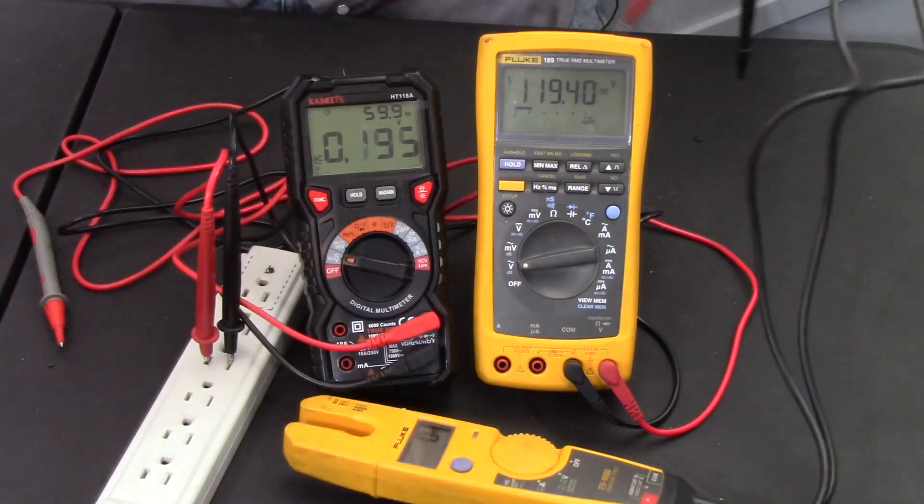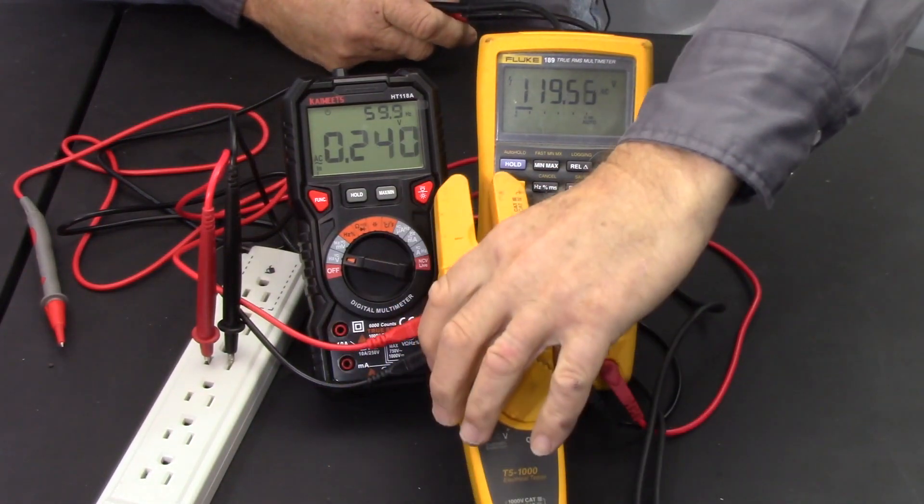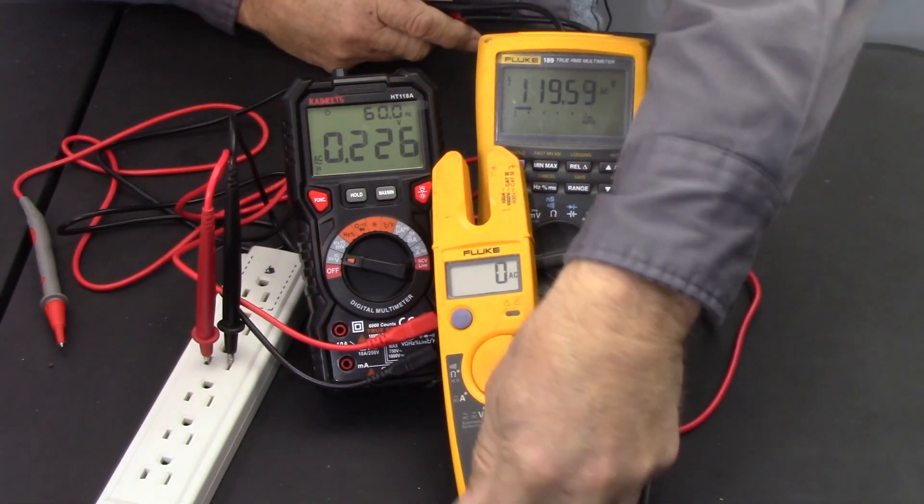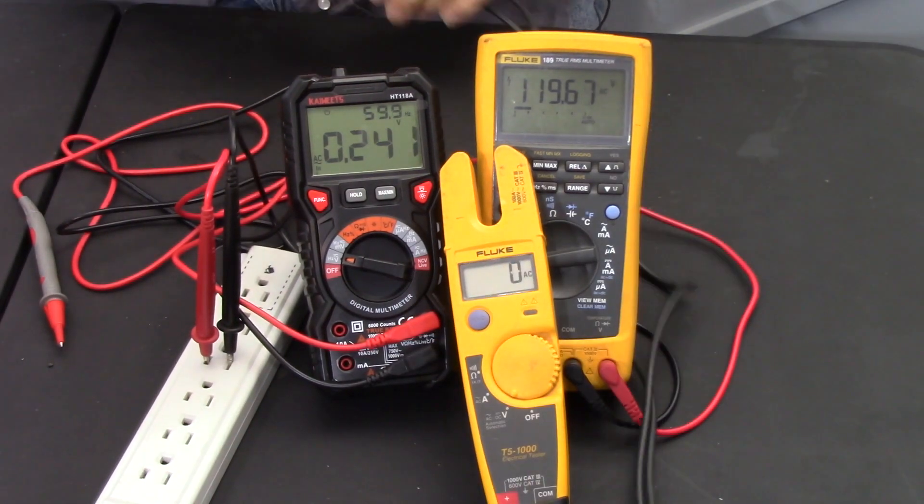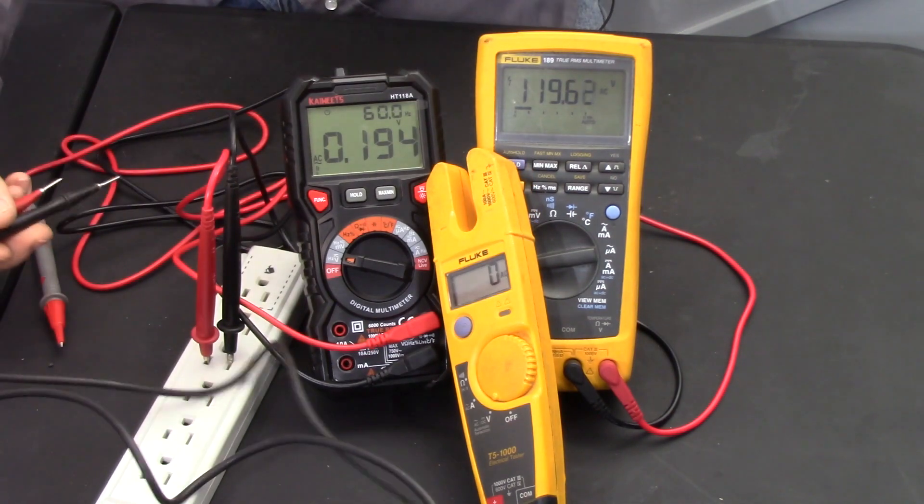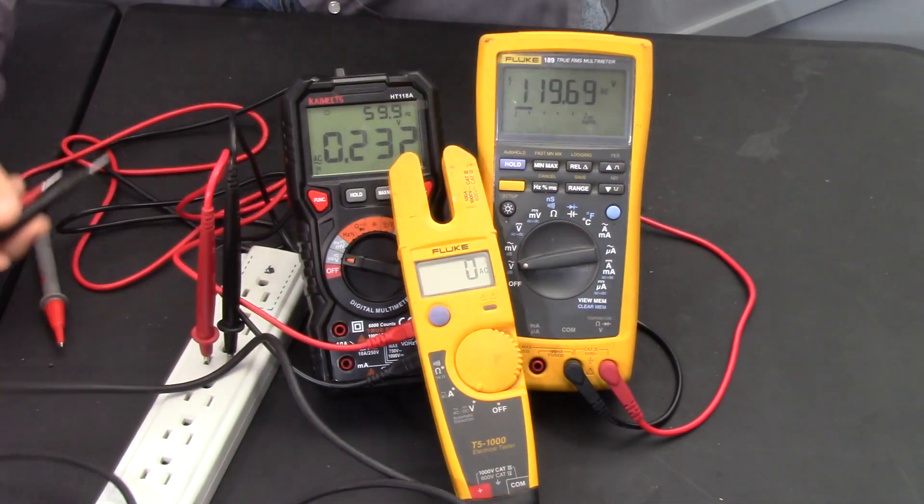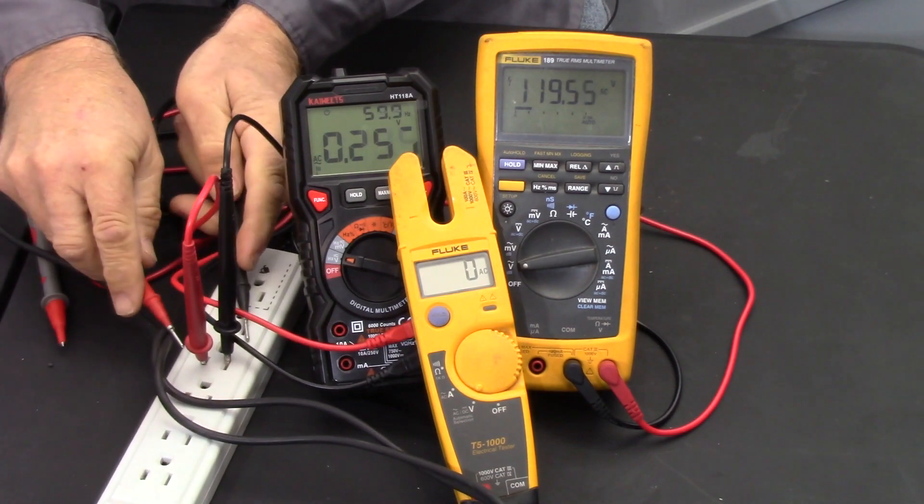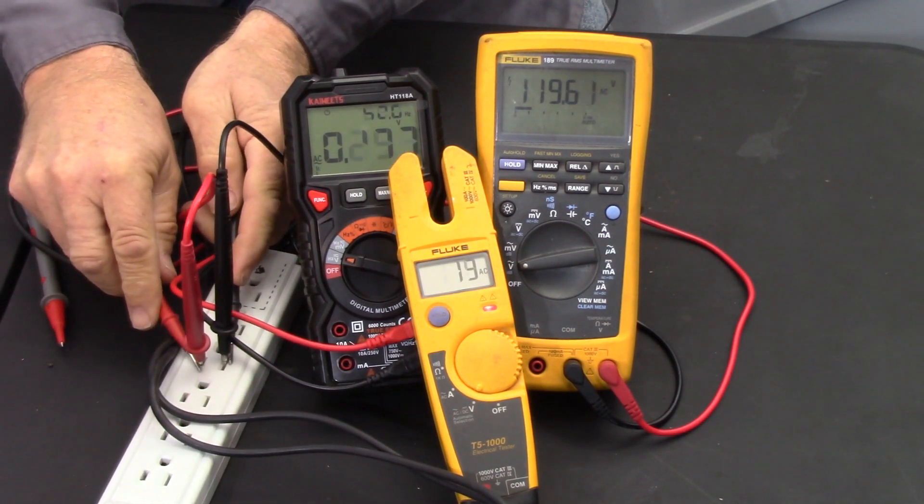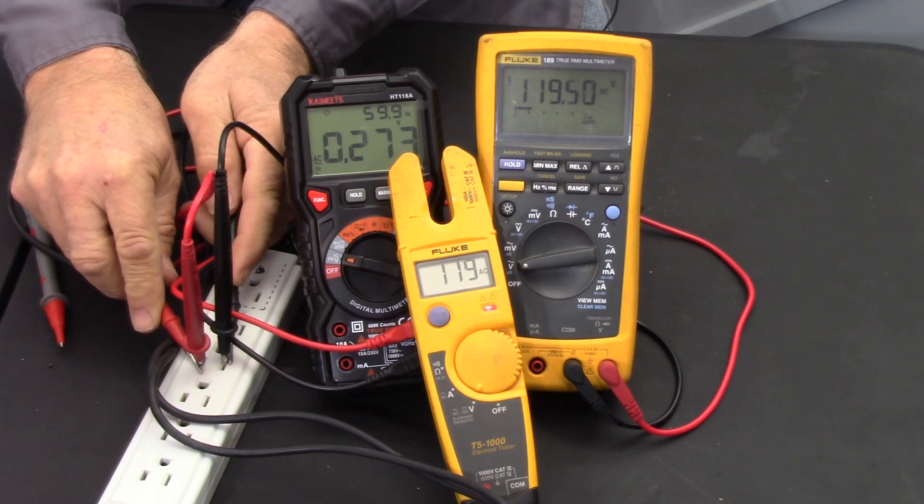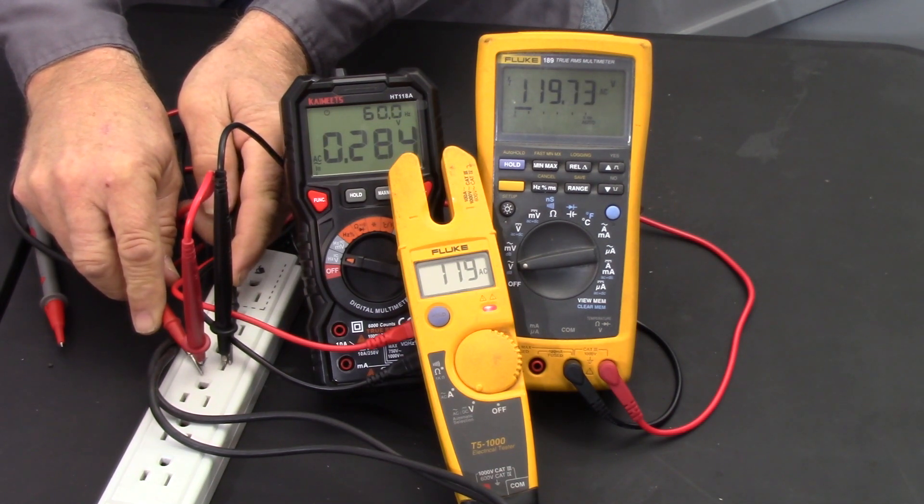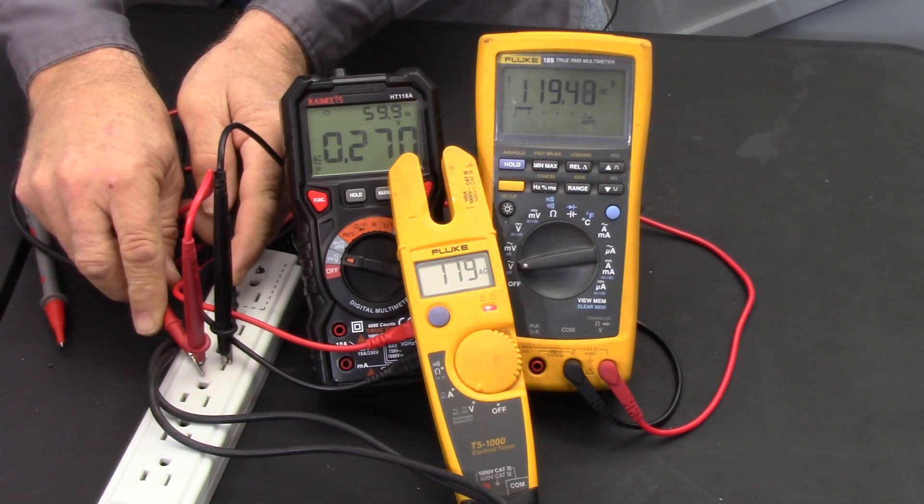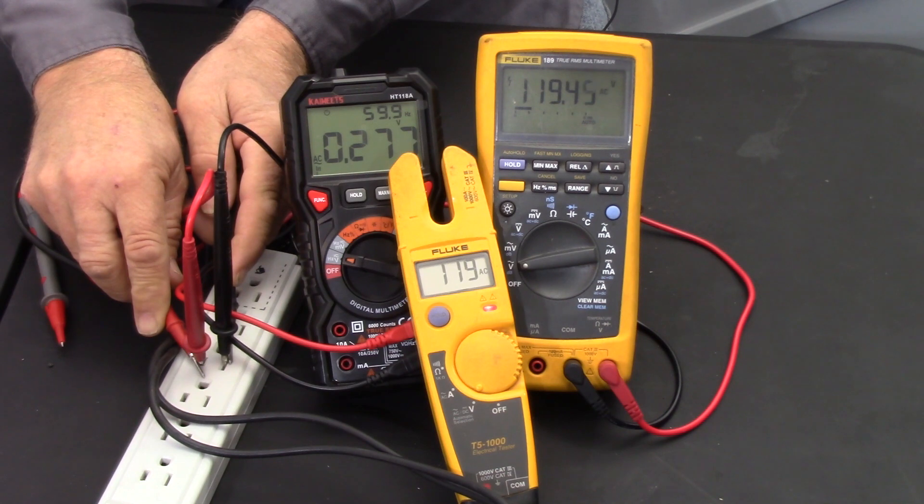Just for fun we'll throw in the Fluke T5-1000 and see what it reads on the same test point. It reads 119. It doesn't get into the decimal points on that. We're all reading 119 volts give or take. If we bounced up over 0.5 I'm sure the Fluke T5-1000 would jump to 120.